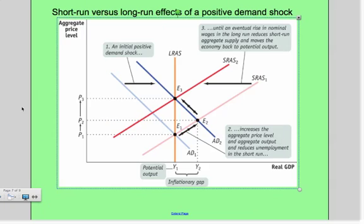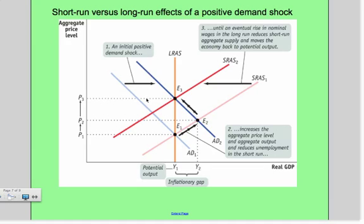Let's look at short-run versus long-run effects of a positive demand shock. An initial positive demand shock moves us from our initial spot here, which is AD1 and SRAS1. An initial positive demand shock moves prices from P1 to P2 and also creates a gap between potential output and actual output. We have a move over here.